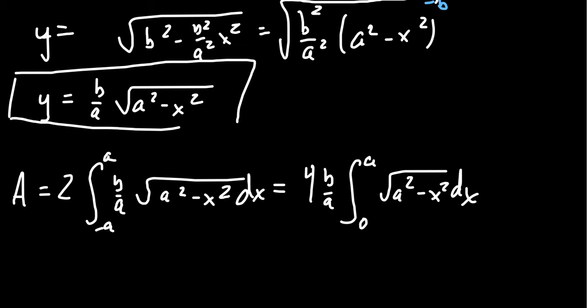So far, that was just setting up an area-type problem. What we're going to do is calculate the antiderivative of the square root of a squared minus x squared. This square root, the square root of a difference of squares, makes me think we probably need to do some type of trigonometric substitution.